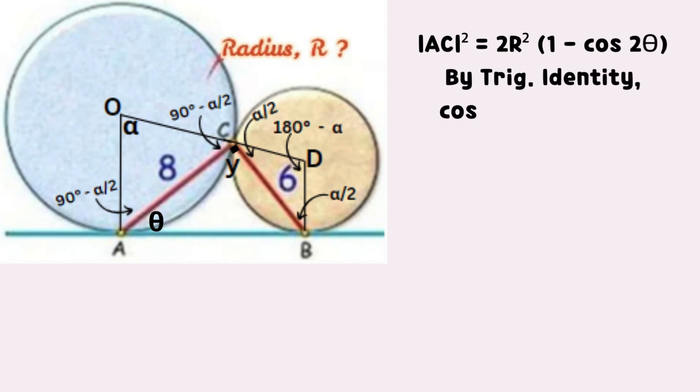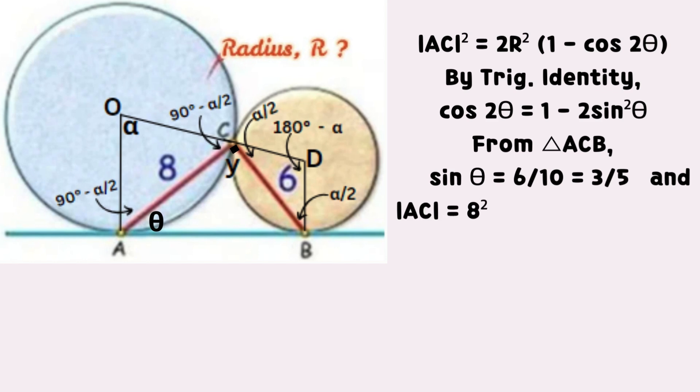Simplify your result using trigonometric identity for cosine 2 times theta. Find the value of sine theta from ACB which equals to 3 divided by 5 and square of line AC equals to 64, substitute in the new equation obtained. And make the square of R the subject of the formula.